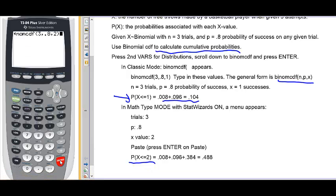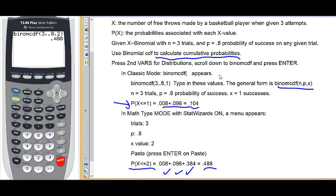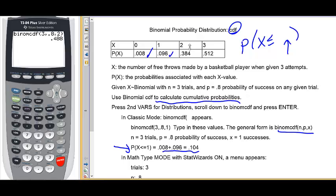So, hit enter. It's all set up. And we find out that the probability that X is less than or equal to 2 is 0.488, which you can verify by adding up the probability that X equals 0 plus the probability X equals 1 plus the probability that X equals 2.